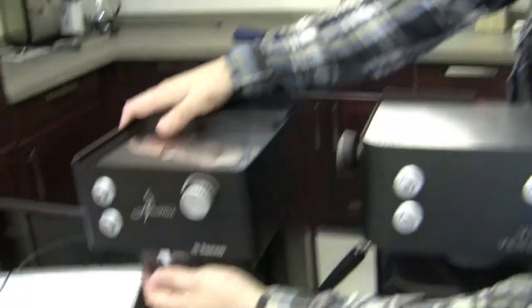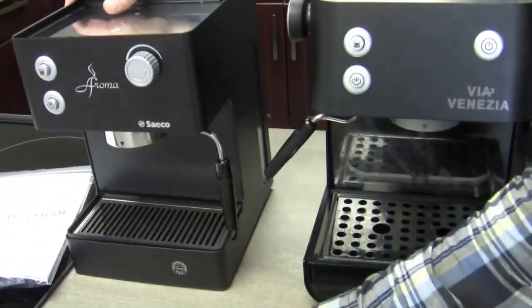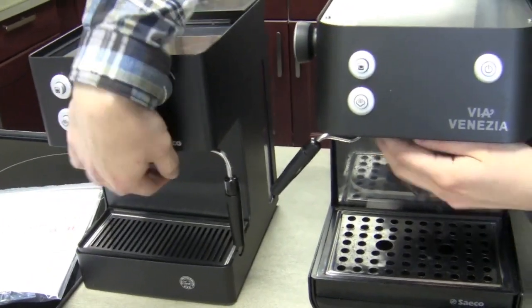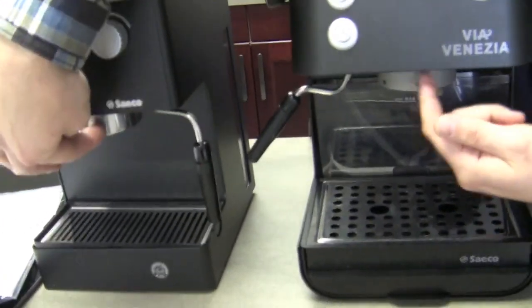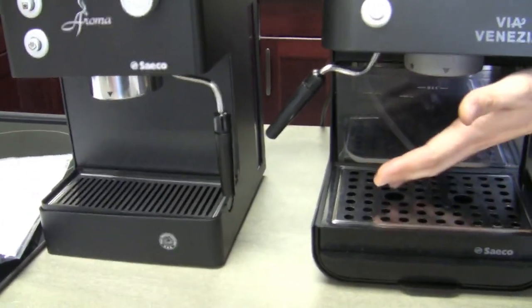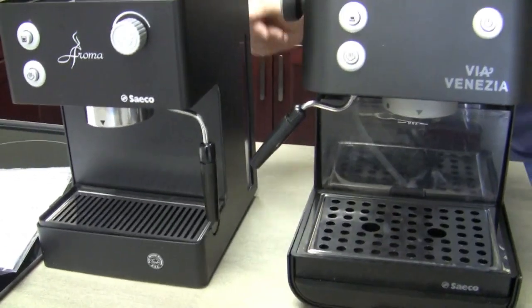So, the only thing that's different about the instructions are the things you've got to do to get things out of the way. But the brew head itself on both of these, other than the locking bell for the portafilter, is exactly the same. We're going to do it on the Via Venezia, but the instructions are exactly as you should be doing it on the Aroma.